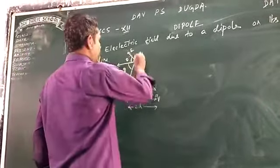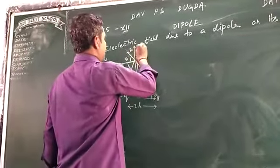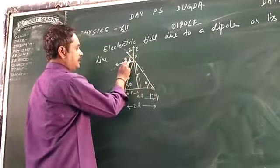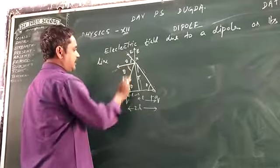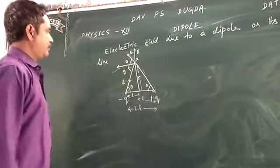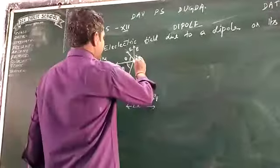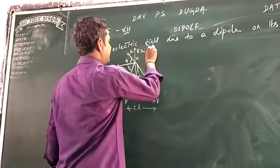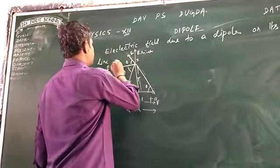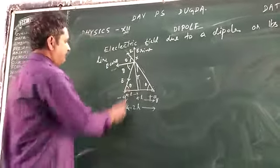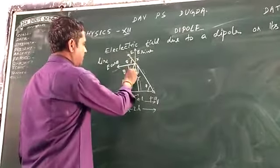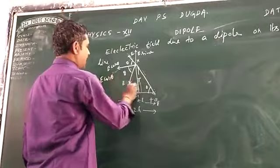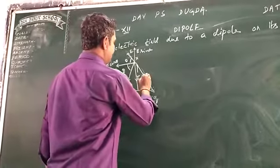If we break this into two components, and if this angle is theta, then we will have E sin theta and E cos theta. Similarly, for the other field, we will have two components: one is horizontal, that is E cos theta, and one is vertical, that is E sin theta.